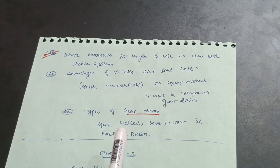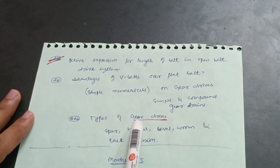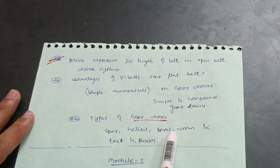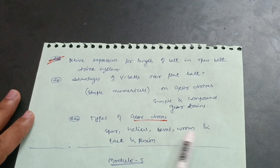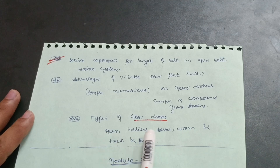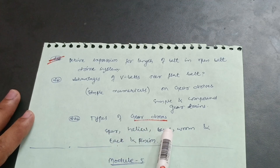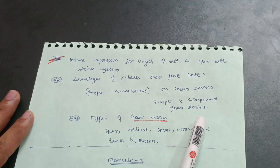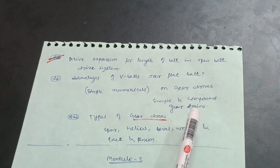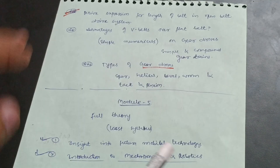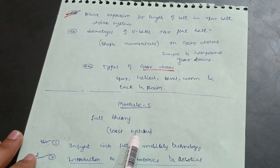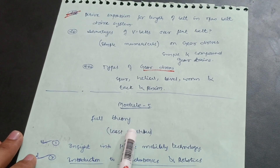For types of gear drives, focus on spur gears, helical gears, bevel gears, worm gears, and rack and pinion — just definitions for these gear drives. Some problems will also be there on gear trains, like compound gear trains and simple gear trains.